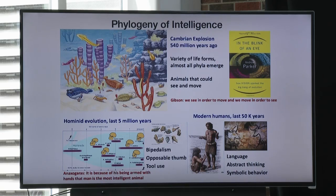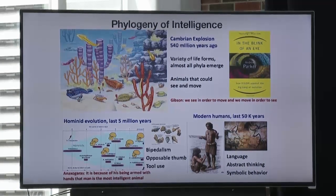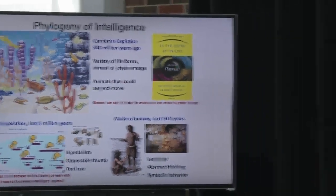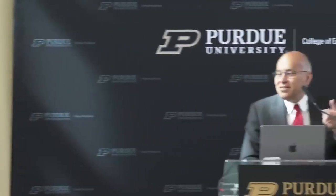We can go on to modern humans coming out of Africa maybe about 60,000 years ago. And somewhere earlier than that — maybe a million years ago, maybe half a million — we have the development of language. Language and symbolic behavior is relatively recent in the evolutionary history. If you think of the whole history of intelligence as 24 hours, from those 500 million years, one million years represents the last two or three minutes.